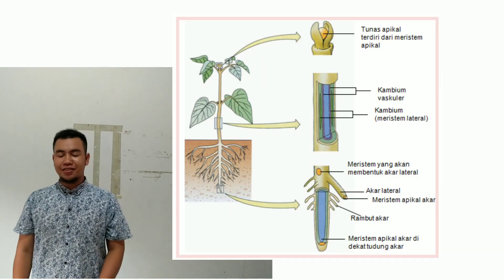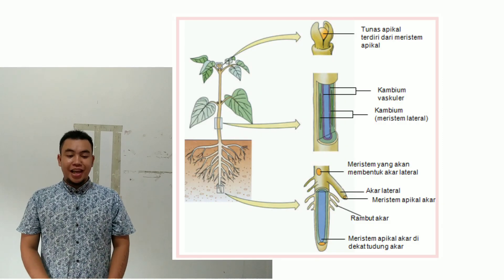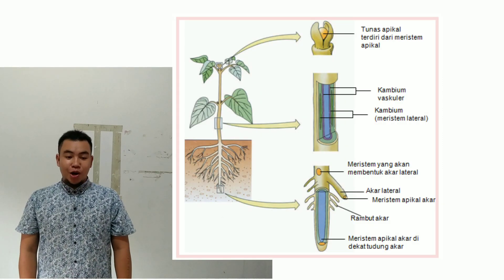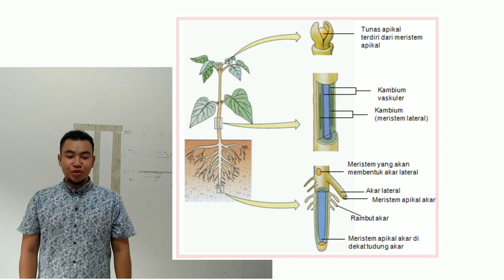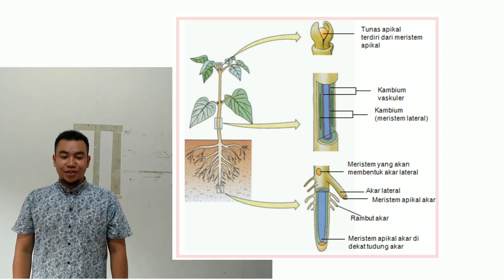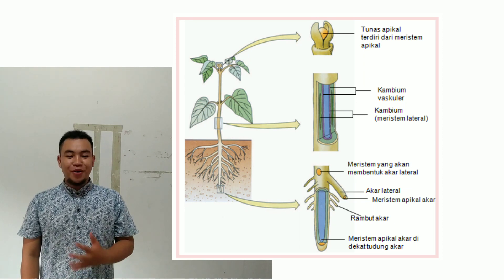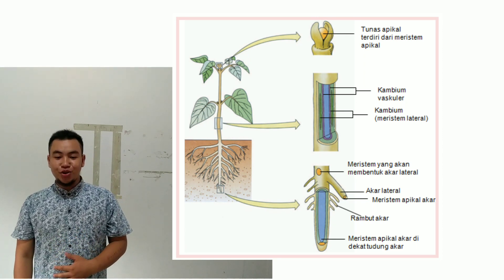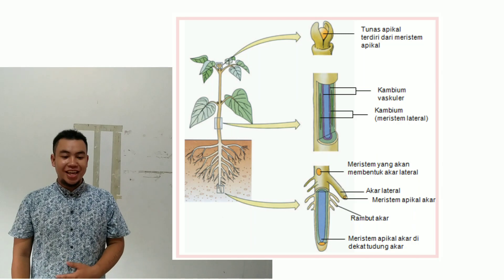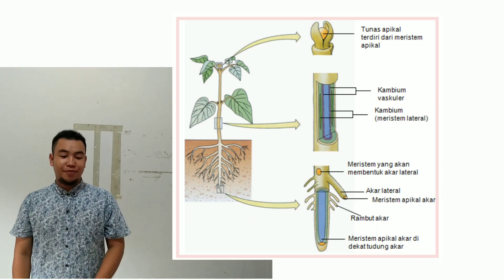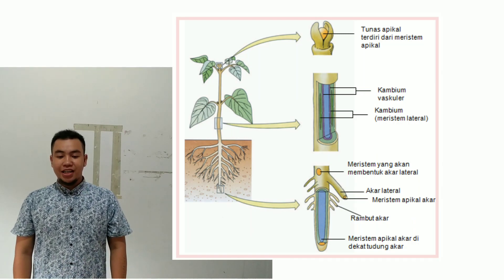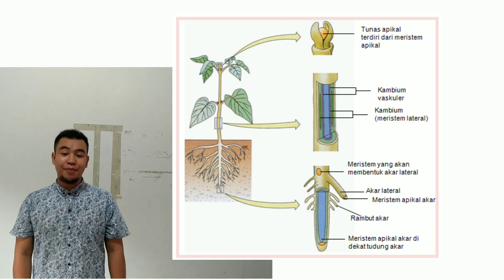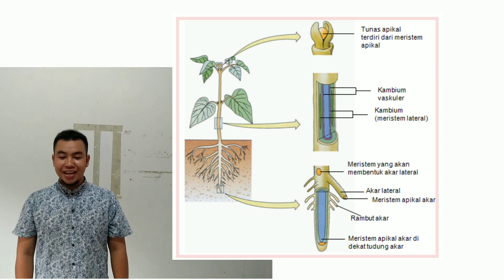Jaringan meristem adalah jaringan yang terdiri dari sel-sel yang aktif membelah. Jaringan meristem yang terdapat di ujung batang dan kambium pada batang tumbuhan dikotil dan gymnospermae disebut meristem lateral.